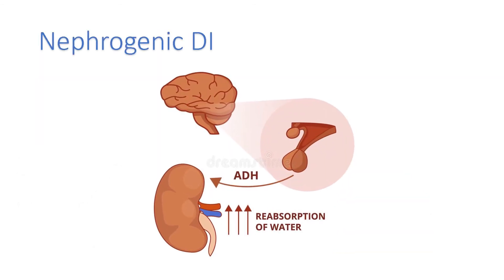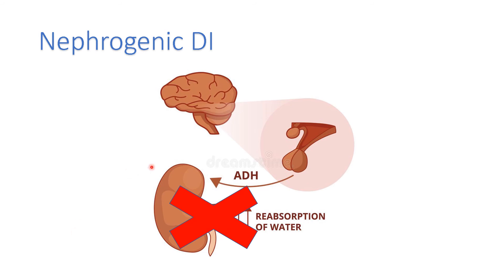Now contrast this with nephrogenic diabetes insipidus, where the problem lies in the kidneys. The brain and pituitary are perfectly normal, but the kidney is not responding — it is resistant to the effects of ADH. This gives essentially the same presentation as central diabetes insipidus.